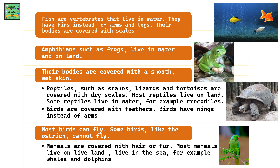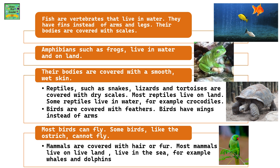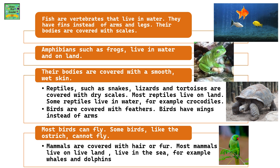Mammals are covered with hair or fur. Some mammals live on land, while others live in the sea — for example, whales and dolphins.